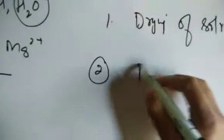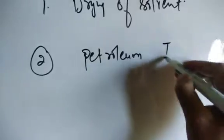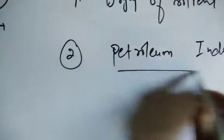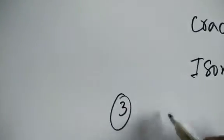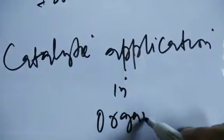Application number two: zeolites have interesting applications in the petroleum industry. They can convert ethanol into different types of oil, acting as a catalyst. They also have cracking applications and isomerization applications in the petroleum industry, making them important catalytic materials in organic chemistry.